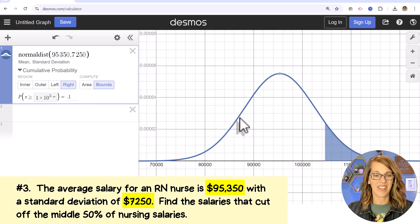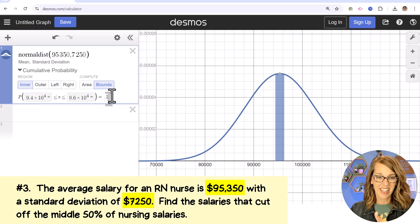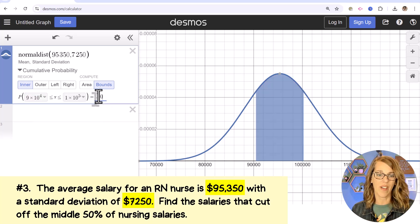I want to find the salaries that cut off. So I do want to find a bounds, not an area. And I want to cut off a middle area. So I'm going to choose inner for my region. So I've got this set up to find the bounds for an inner region. Our inner region is 50%. And that means that I want to change this number here to 50% or 0.50.